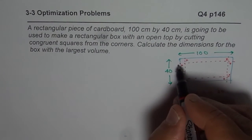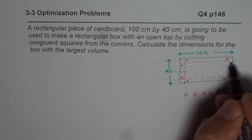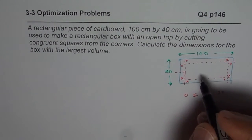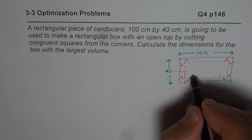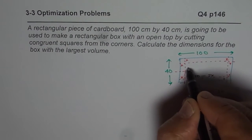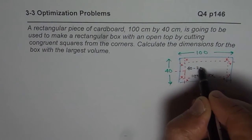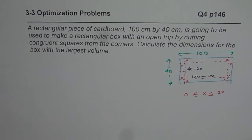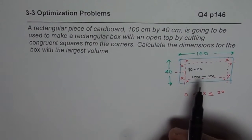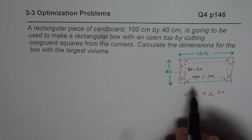Now once you cut these corners, you fold them up. So what you really get is a box whose height is x, whose length is 100 minus 2x, and whose width is 40 minus 2x. That is the kind of box which you will get and the question is to maximize the volume of this box.